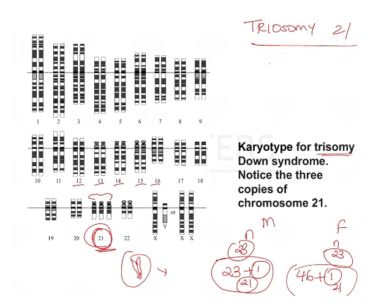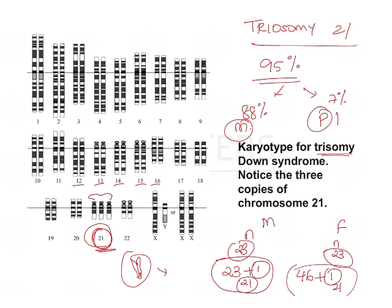This type of Down syndrome accounts for 95% of all cases, of which 88% is because of maternal non-disjunction and 7% is because of paternal non-disjunction. So 95% of all cases are because of trisomy 21.